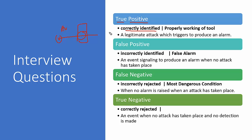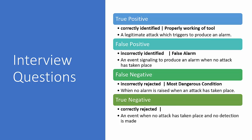For the SOC analyst, the biggest concern is false negative — incorrectly rejected — which is the most dangerous condition. This means no alarm is raised when an attack has actually taken place. For example, an antivirus failed to detect a virus that was actually present. This is one reason a good defense-in-depth strategy is required: if one control fails, another is there to block. For instance, a packet-filtering firewall backed by a stateful-filtering firewall.